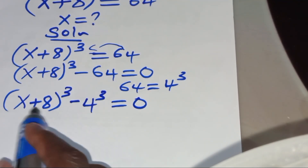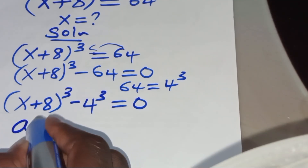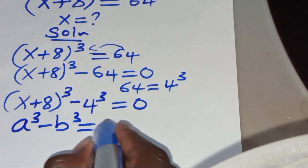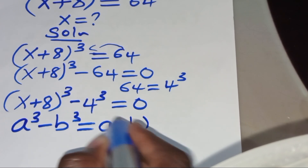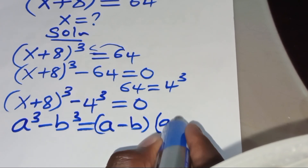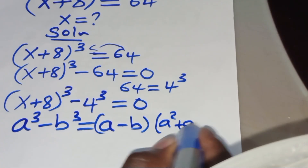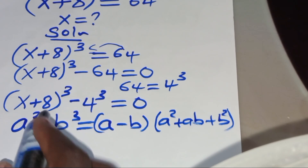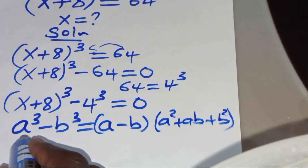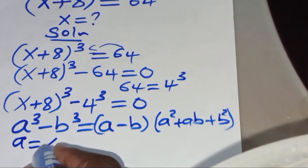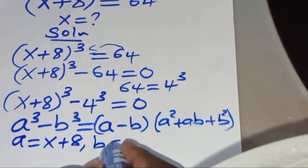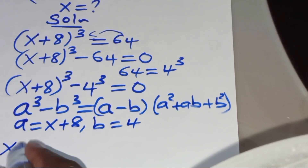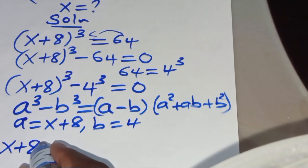Now (x + 8)³ − 4³ is a difference of cubes, expressed as a³ − b³ = (a − b)(a² + ab + b²). Applying this identity, a = x + 8 and b = 4.